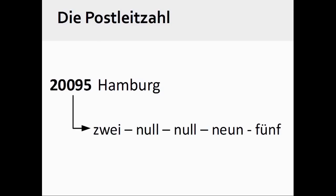However, this is not the case with larger numbers, such as one encounters with a German postal code or zip code. When speaking a German postal code, one expresses the numbers individually: zwei, null, null, neun, fünf.